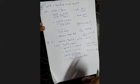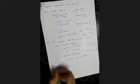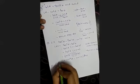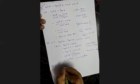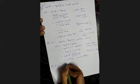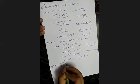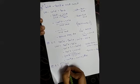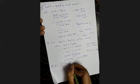Hence proved. Next question: prove that root of 1 plus cos theta by 1 minus cos theta is equal to cosecant theta plus cot theta.